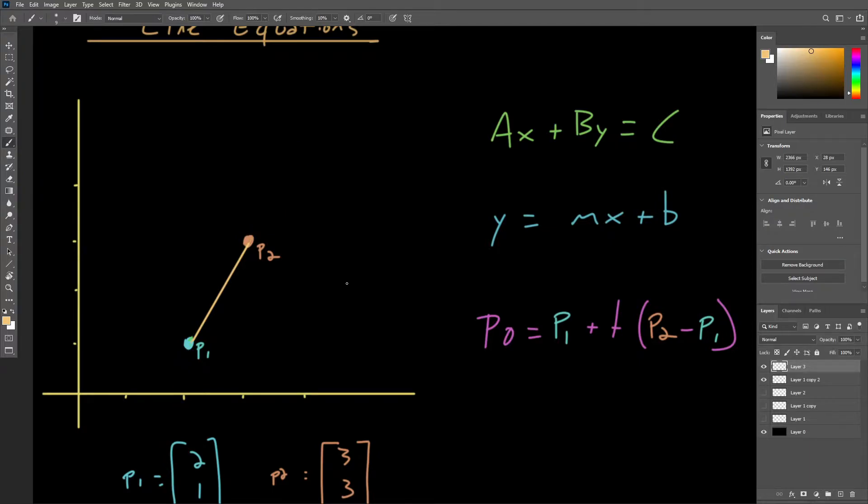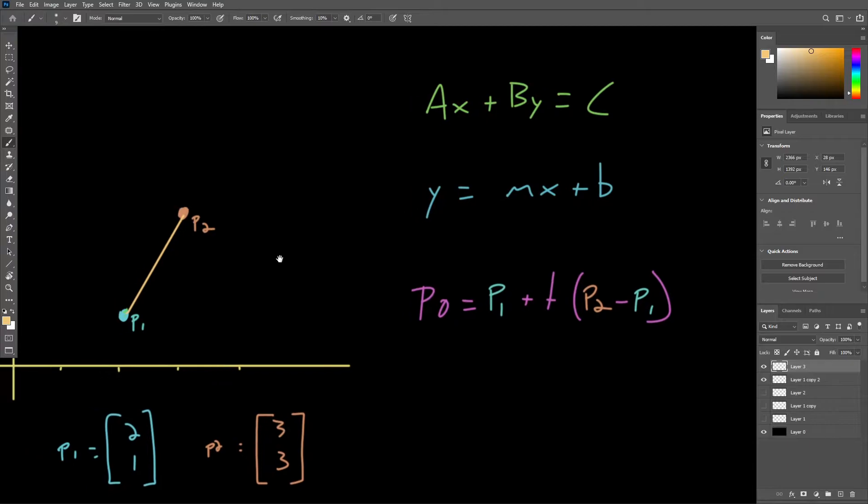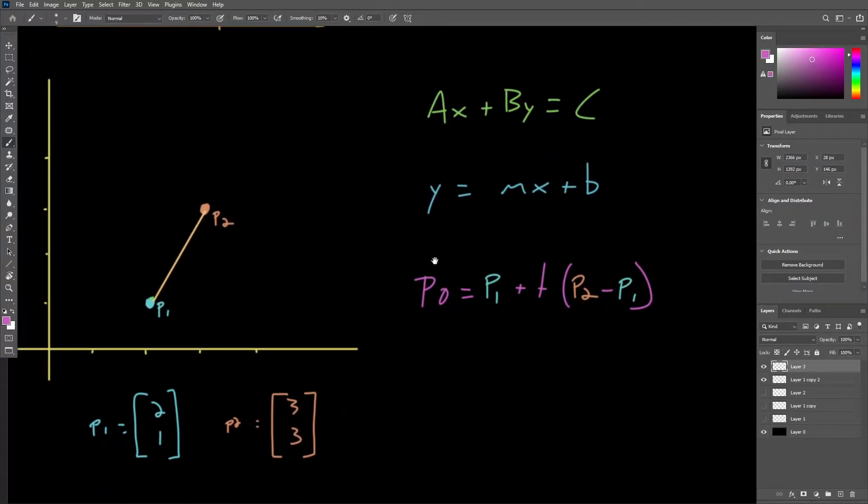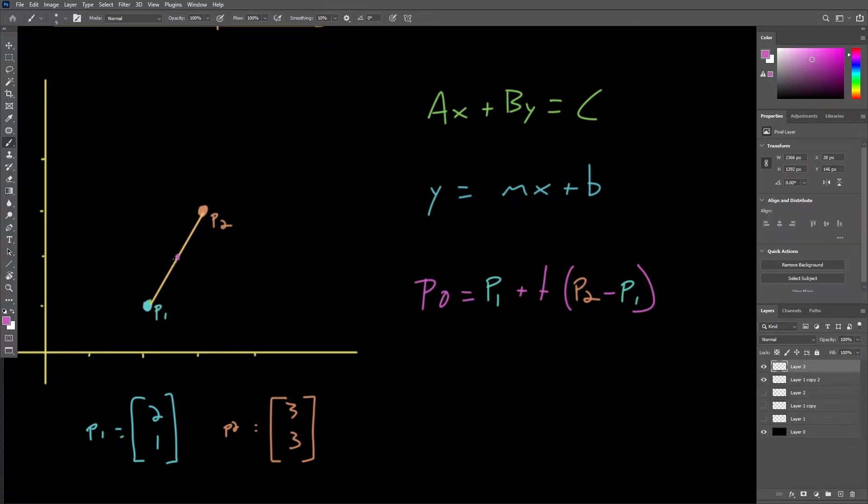Another interesting way of representing a line given two points is to use this equation. Here we have P0, which is some point on the line, like maybe this point right here. We can say that this point on the line is equal to the components of P1 plus some value T multiplied by the components of P2 minus the components of P1.